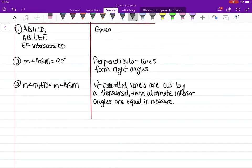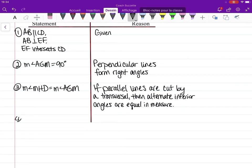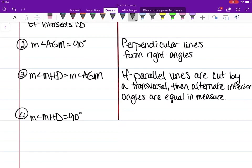And so our next line will be that the measure of angle MHD is 90 degrees by substitution, because this here is 90.